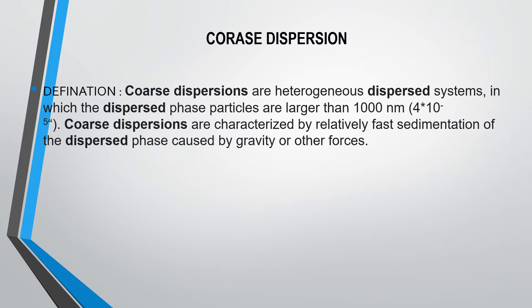Coarse dispersions are heterogeneous dispersion systems in which the dispersed phase particles are larger than 1000 nanometers. They are characterized by the relatively faster sedimentation of the dispersed phase.